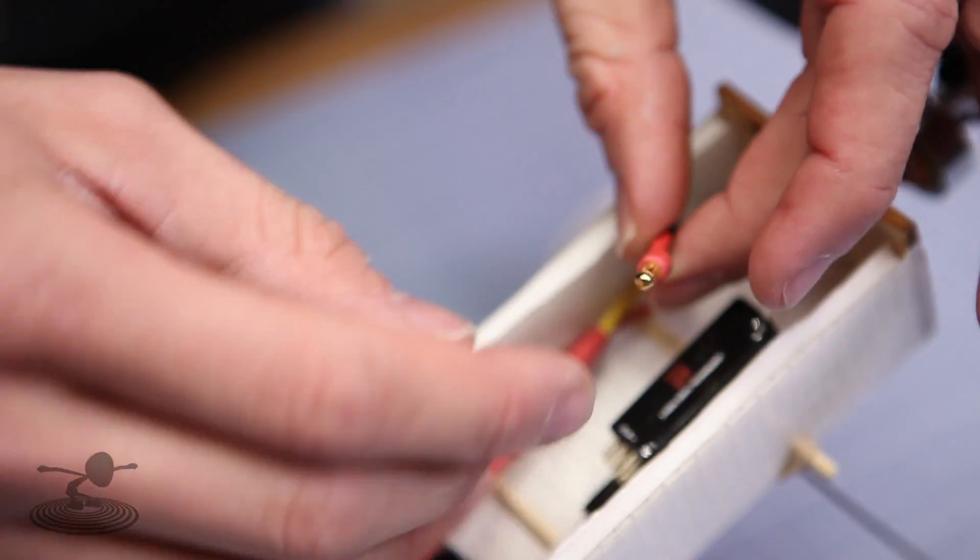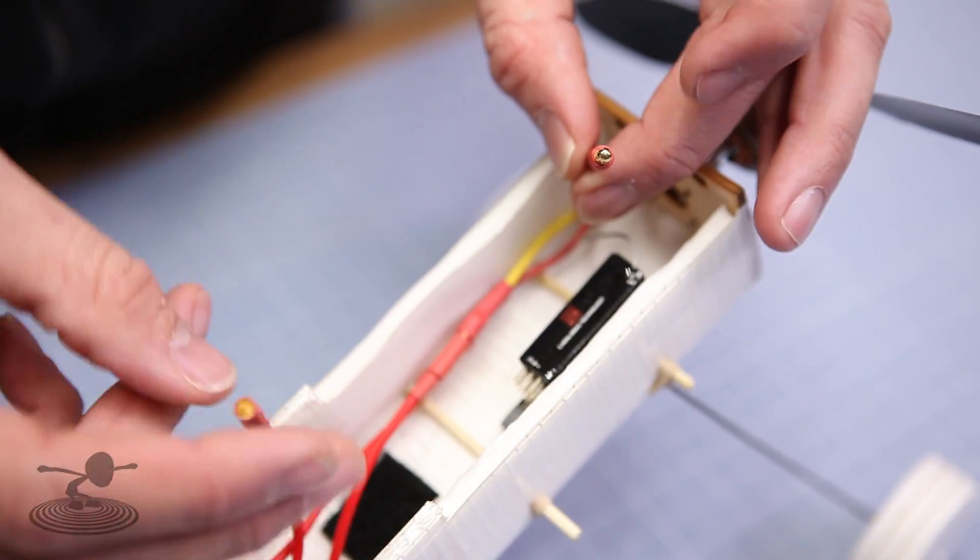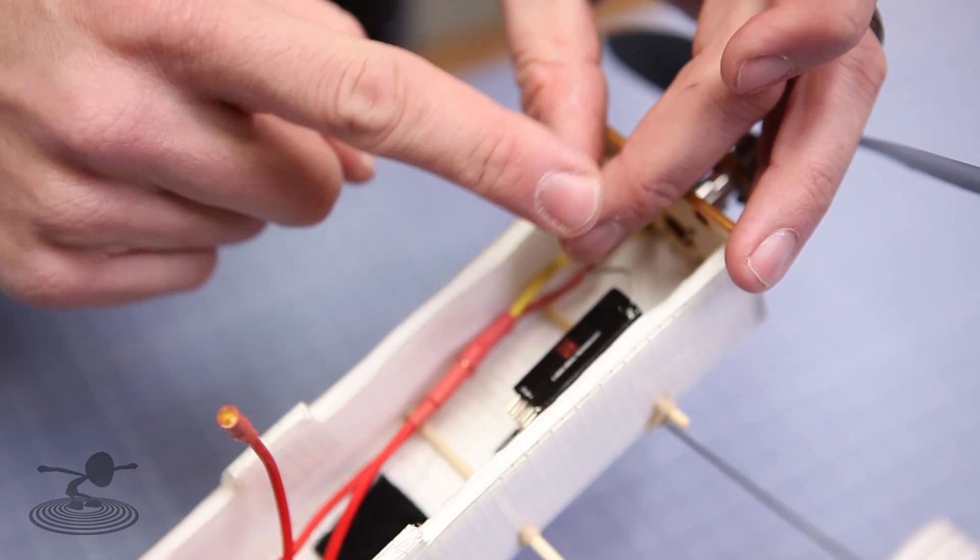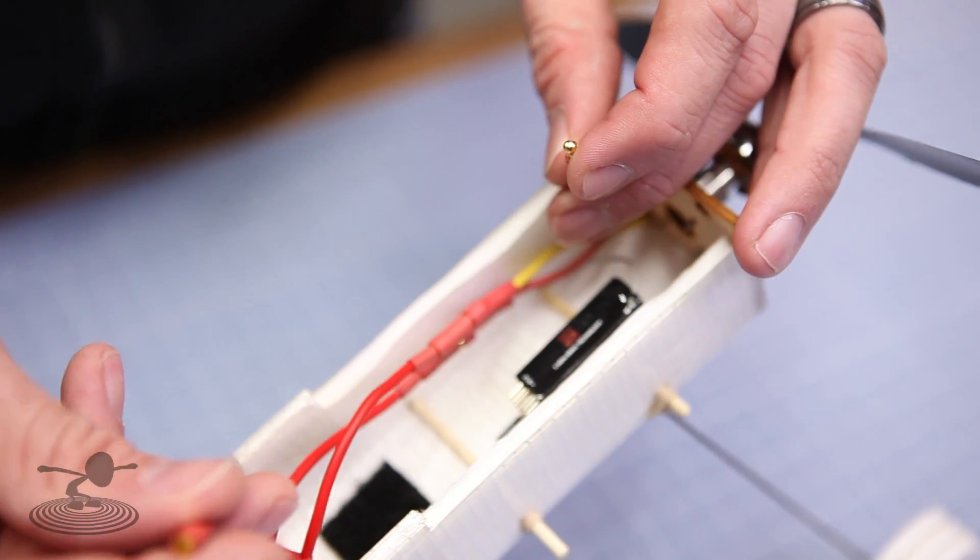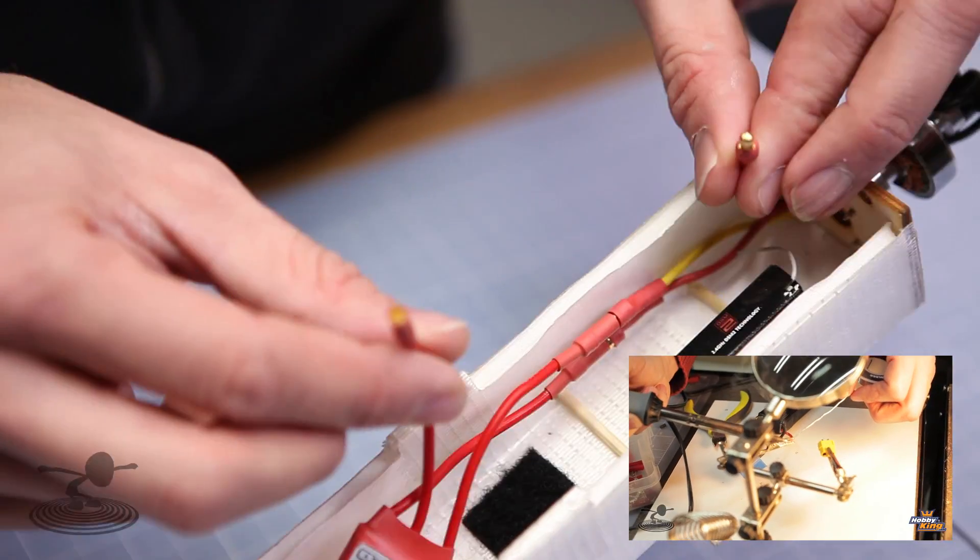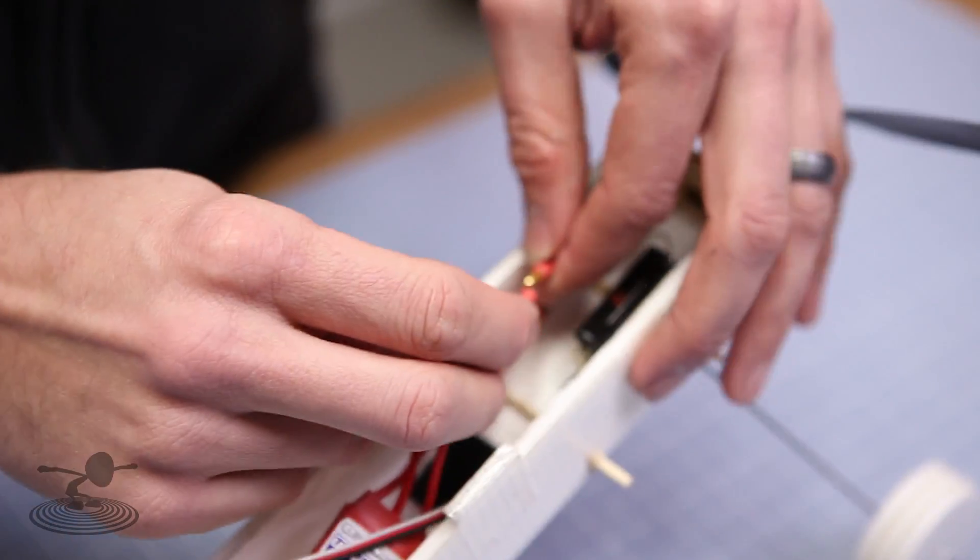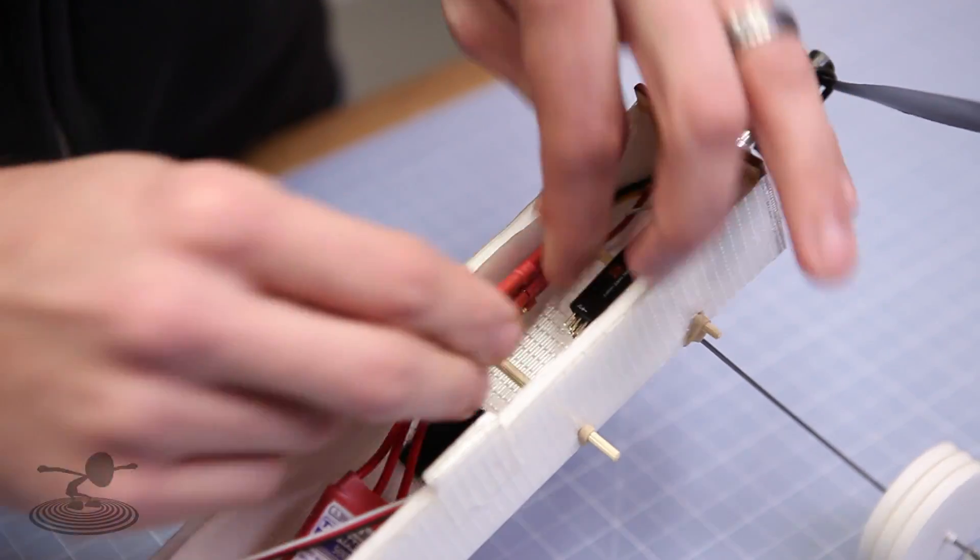Nowadays a lot of manufacturers include the bullet connectors on their ESC already soldered up for you. But for some reason if you order a motor and it doesn't have the bullet connectors or the proper connector on the ESC and you have to solder it, we do have a video that will be linked below that will give you the basic techniques on soldering bullet connectors, ESC, and for that matter even your battery connector. Basically teach you how to solder if you've never done it before. Feel free to look at that link below if you need to do that step.